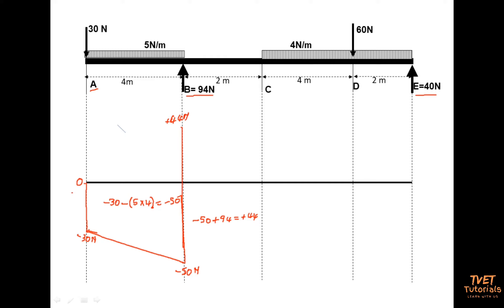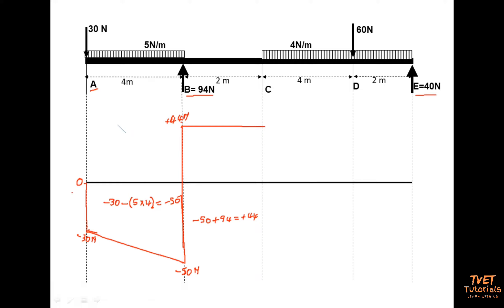The next question is: what is there between B and C? Between B and C there is no UDL. When there is no UDL, I do not go down — I remain at 44 newtons. So I draw a horizontal line to take me from B to C, still at 44. Since I have a horizontal line there's no need to label 44 newtons again at point C.